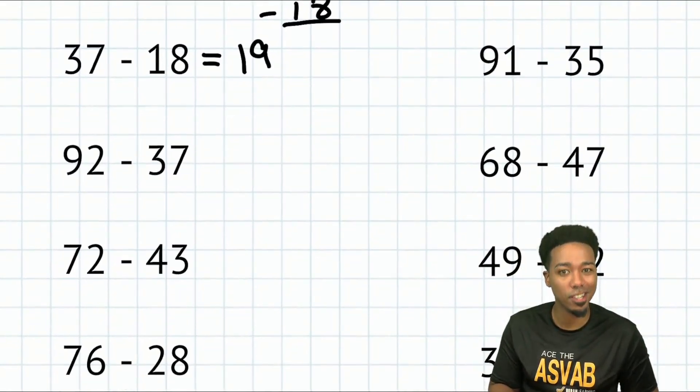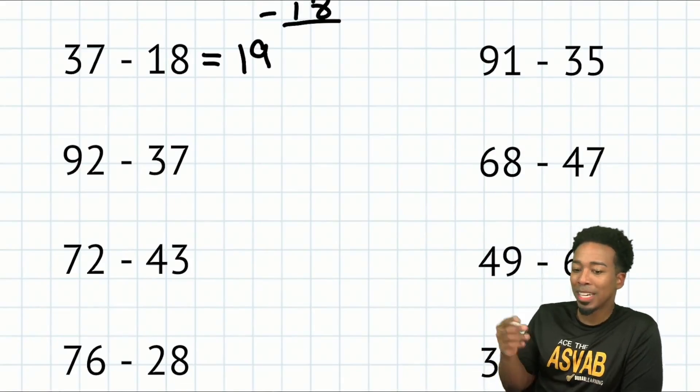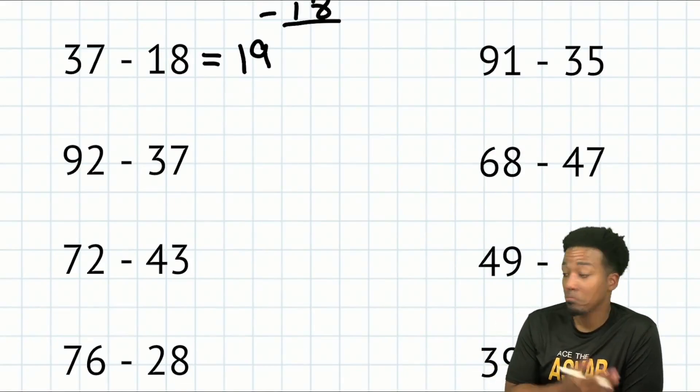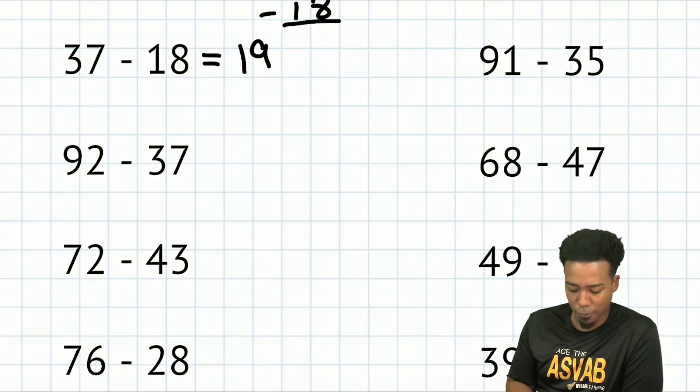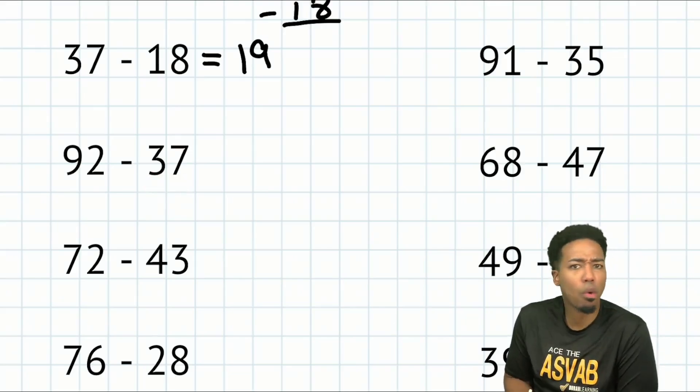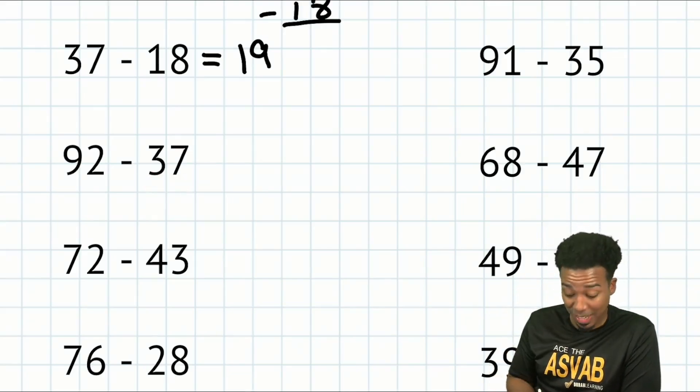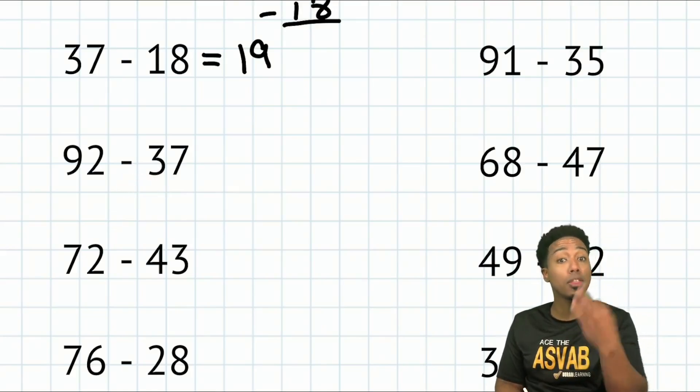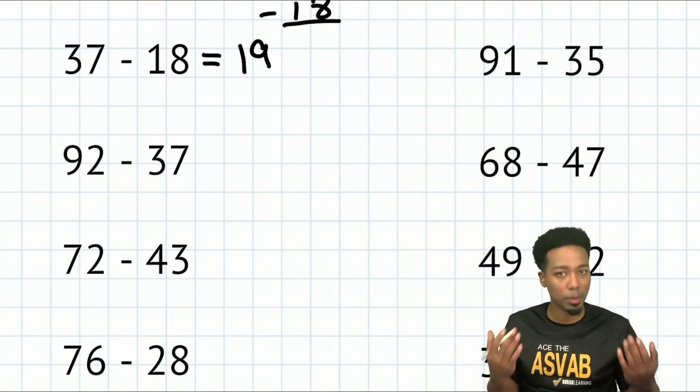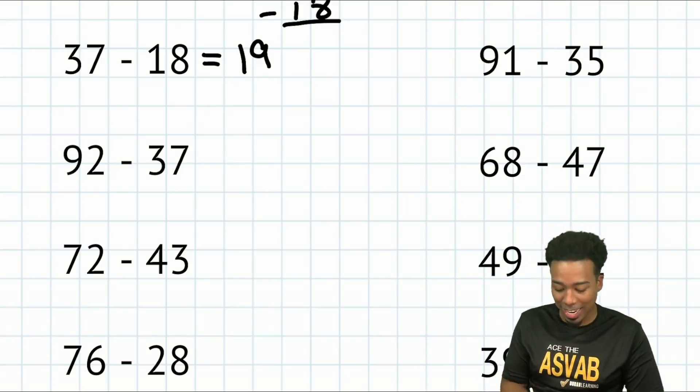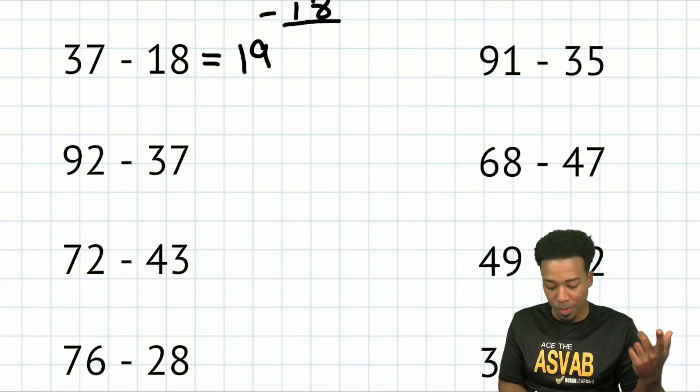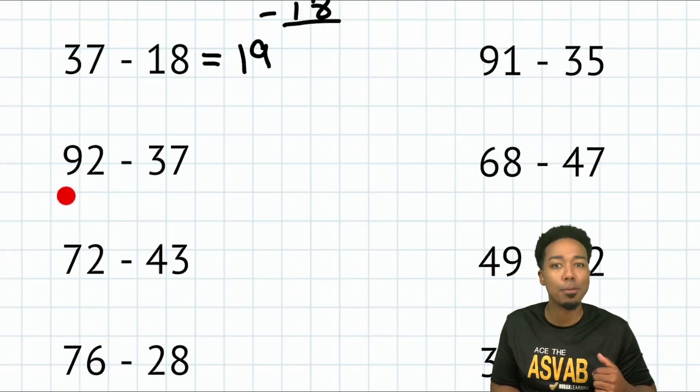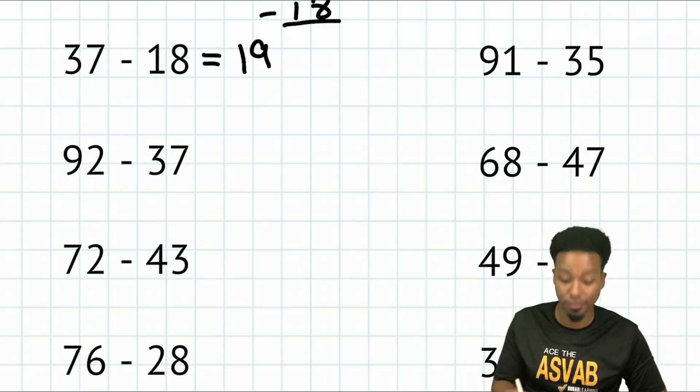Let's take a look at number two. 92 minus 37. Let's try it again. What's a nearby number that's going to make life easier for us? Let me just take away 40. But I recognize that if I take away 40, I'm taking away three too much. So I'm going to take away 40, but then add three back. 92 minus 40 is 52. Add the three back is 55. And we're done.